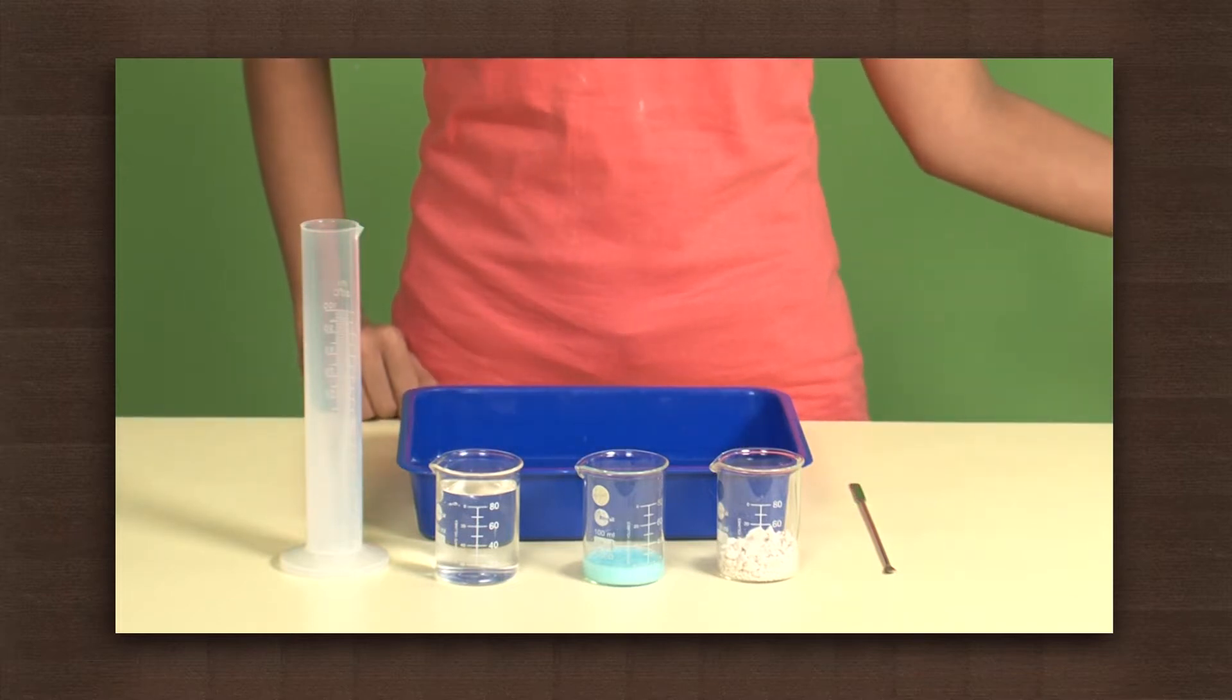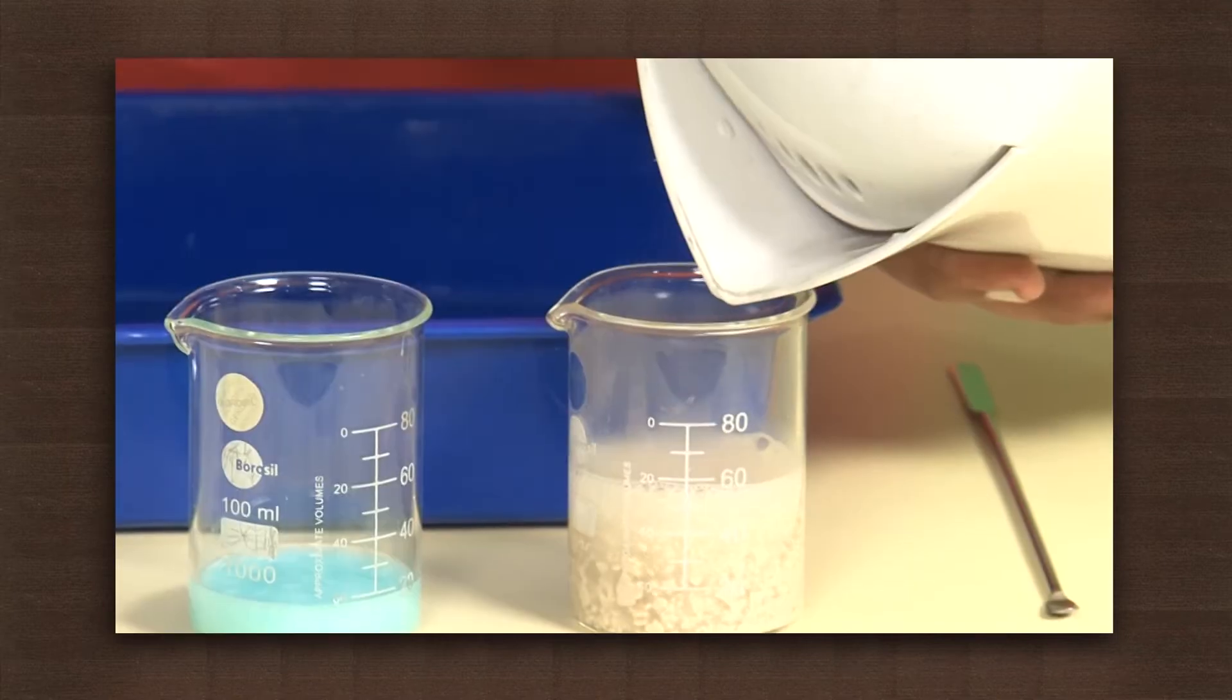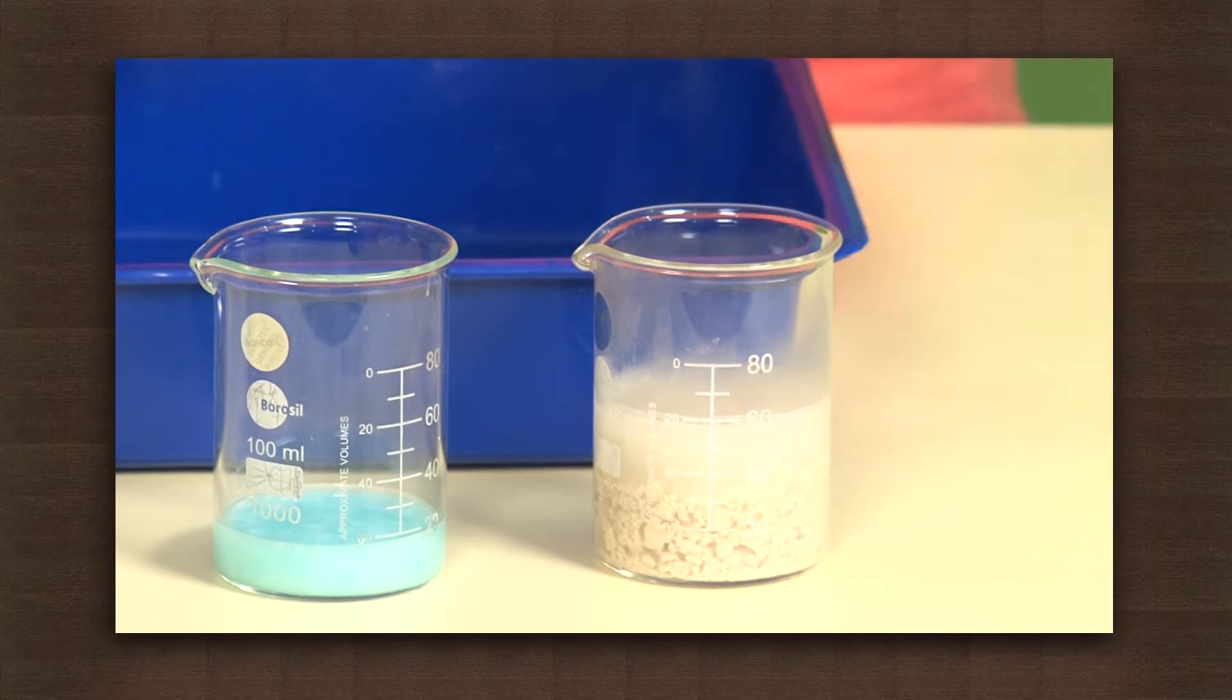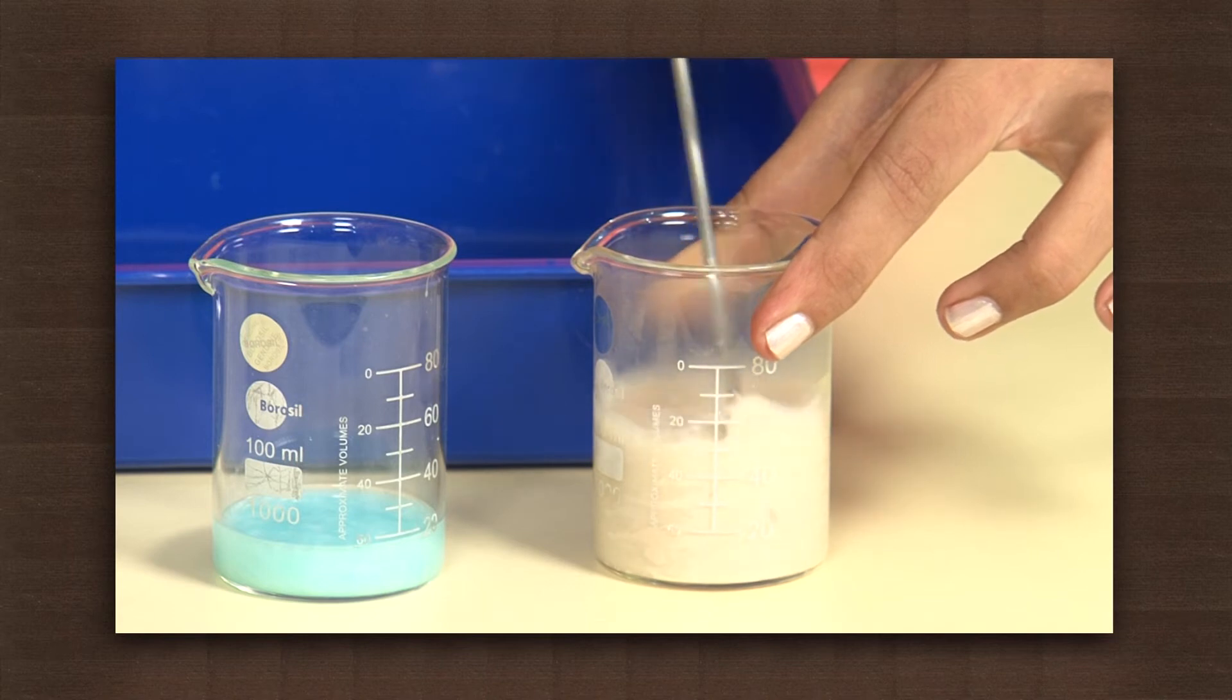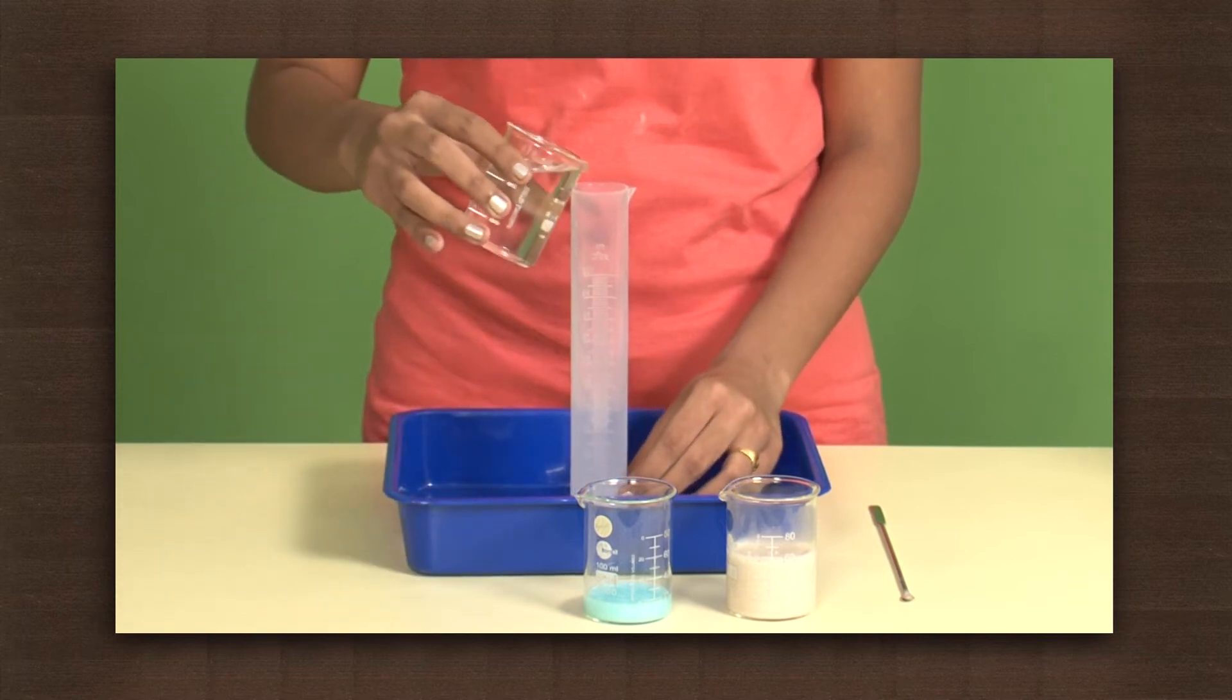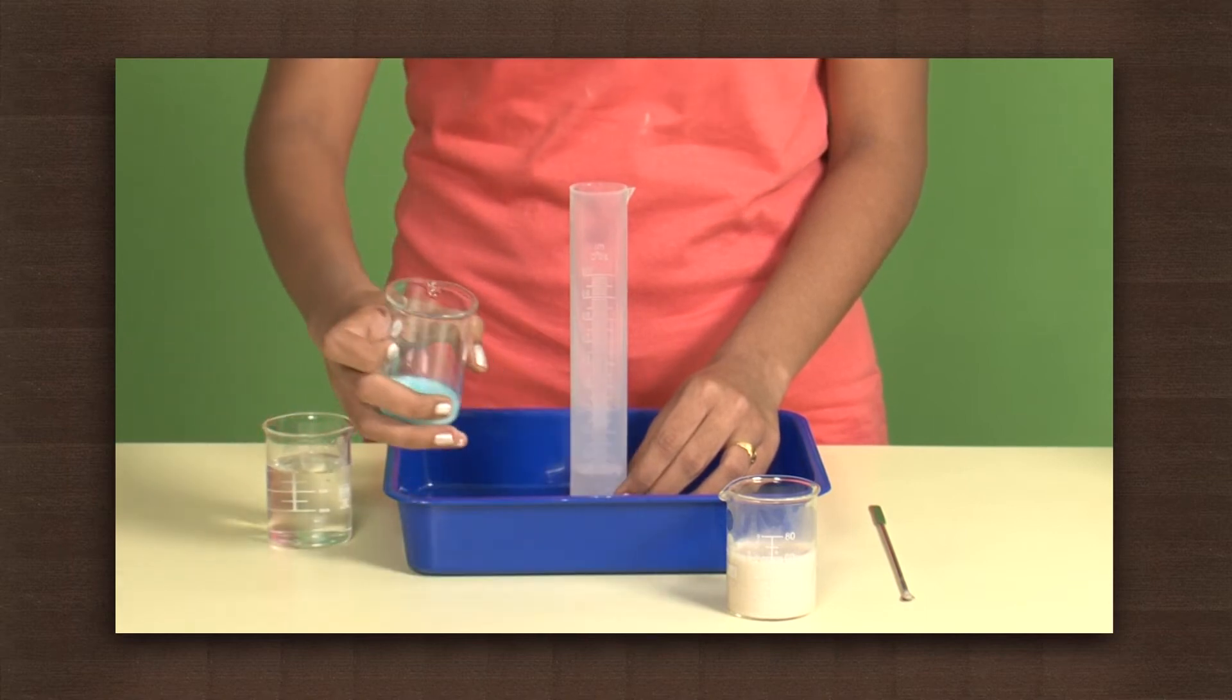Dissolve dry yeast by mixing it in warm water. Now in a long slender cylinder, put some hydrogen peroxide. Add the liquid soap and shake a little.